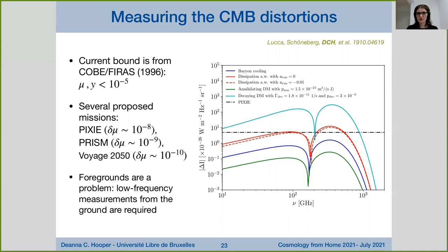The only current bound on CMB spectral distortions comes from the FIRAS instrument on the COBE satellite. This bound from 25 years ago — 1996 — placed mu and y smaller than 10 to the minus 5. While this was a remarkable measurement at the time, it is 25 years old and observation is now really lagging behind theory. We can theoretically calculate the predicted spectral distortion signal in many models, and the cosmology code CLASS now features computation of spectral distortions by default.